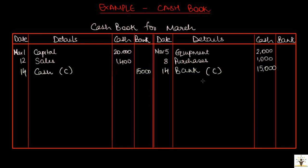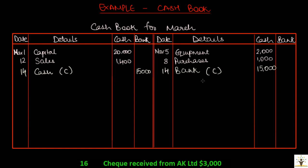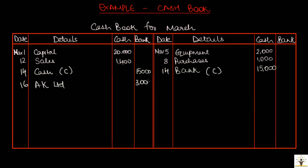Next, check received from AK Limited, $3,000. This is a receipt transaction, so entry will be made on the debit side of the cashbook. Details will be AK Limited. And since it's received by check, the amount will be recorded in the bank column.